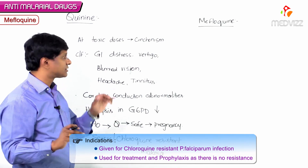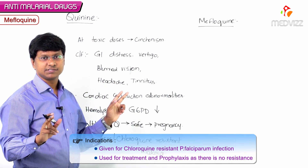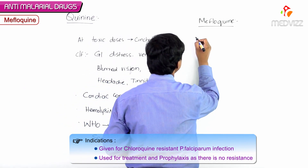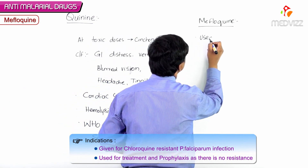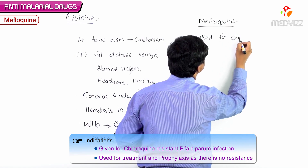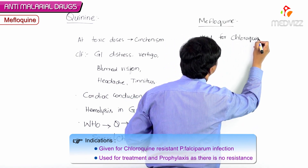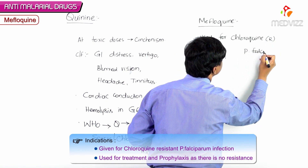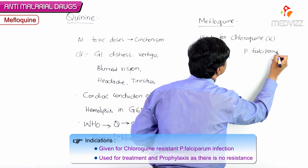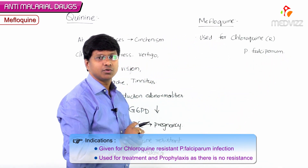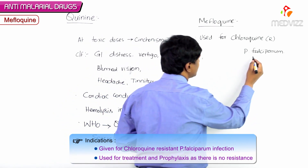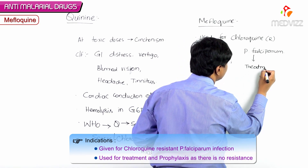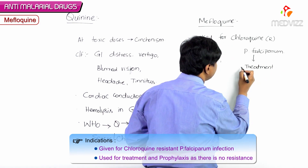Regarding quinine, in order to prevent the emergence of resistance, we don't give quinine for chemoprophylaxis — we use it only for treatment. Whereas mefloquine is used for chloroquine resistant plasmodium falciparum infections for both treatment purpose and as well as for the prophylaxis.